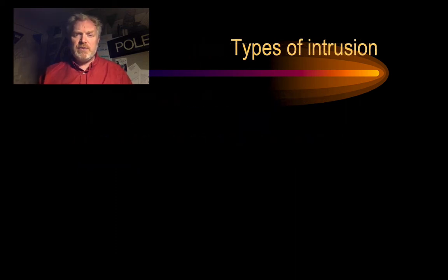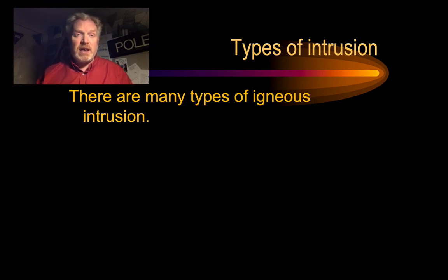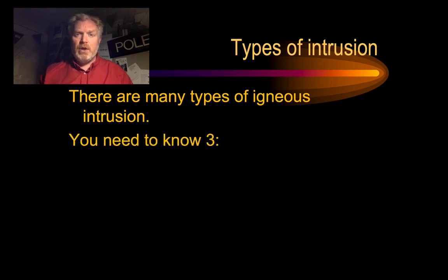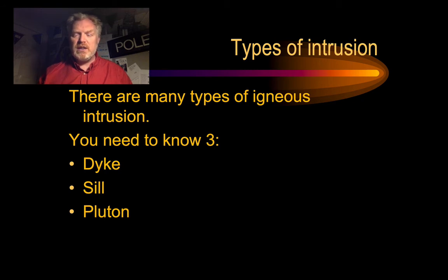There are lots of different types of intrusion — lopoliths, facoliths, lacoliths — but we really only need to worry about three. For those that did GCSE, it's the same three. The three we need to know are dykes, sills, and plutons. What we want to do is look at the features of each of these and try to identify what differentiates them, how we can tell them apart.